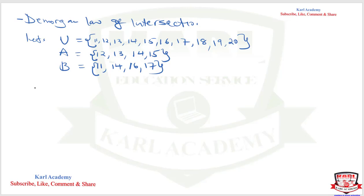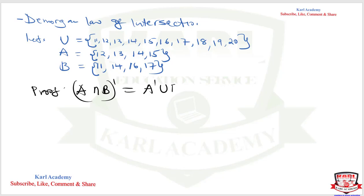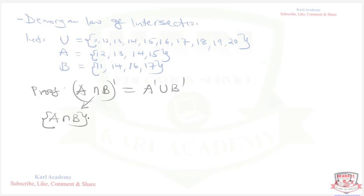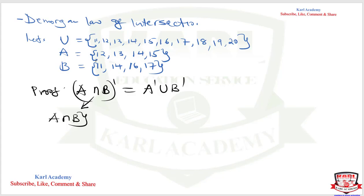We want to confirm De Morgan's Second Law: the complement of A intersection B equals A complement union B complement. First, let's find A intersection B — we look for elements common in both A and B. Checking the elements of A against B, we find that 14 is present in both sets. So the only common element is 14, meaning A intersection B equals {14}.